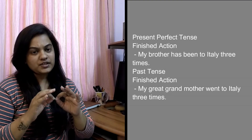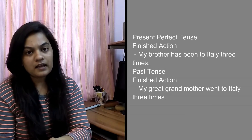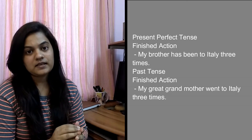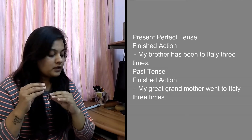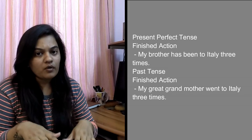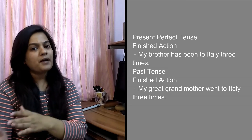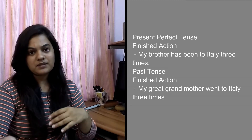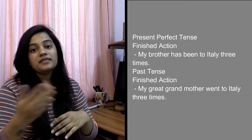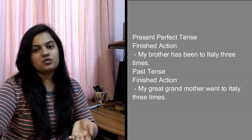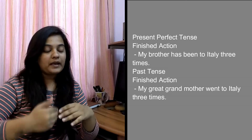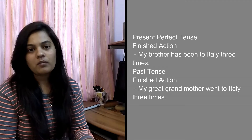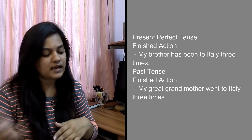A finished action in someone's life where the person is still alive but the action is over — then you use present perfect tense. But when the action is over and the person is also no more, then you use simple past tense. For example, my brother has been to Italy 3 times — meaning her brother is still alive. My great-grandmother went to Italy 3 times — meaning she is no more, but she had been to Italy 3 times.